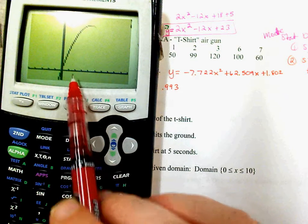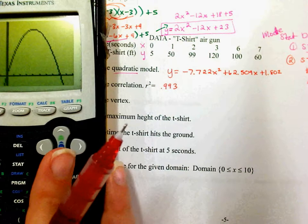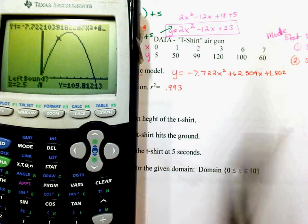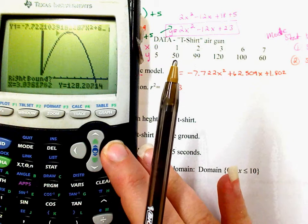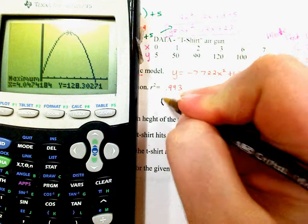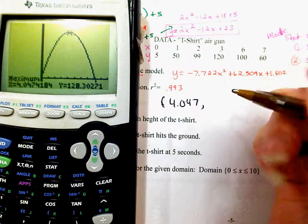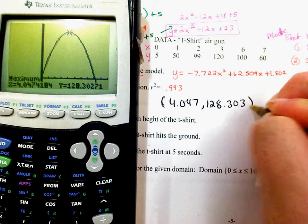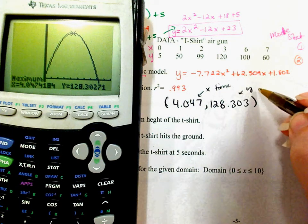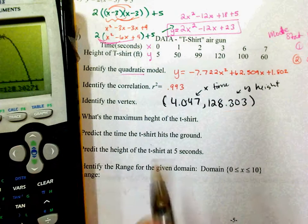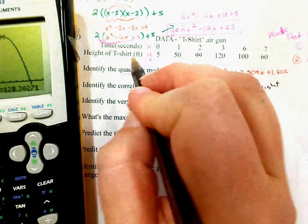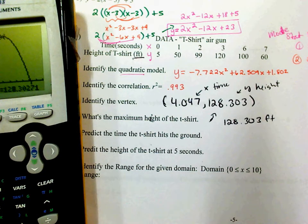I can see the quadratic. The vertex is at the maximum. Go Second, Calculate, Maximum. Go to the left of it, press Enter, then to the right, press Enter, Enter. The vertex is the point (4.047, 128.303). X represents time and Y represents height of the t-shirt. The maximum height of the t-shirt is 128.303 feet, reached at 4.047 seconds.